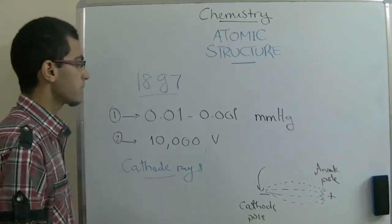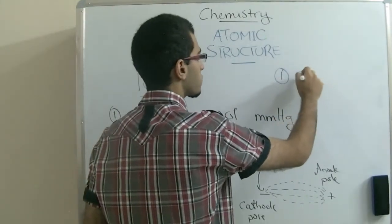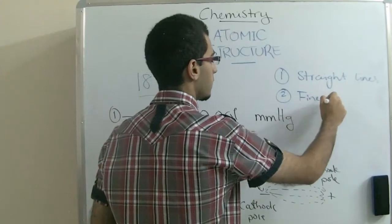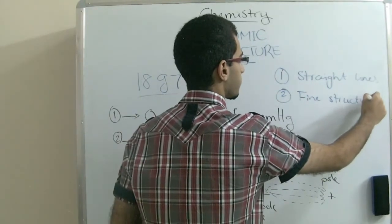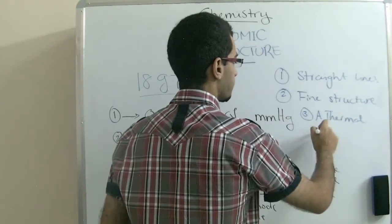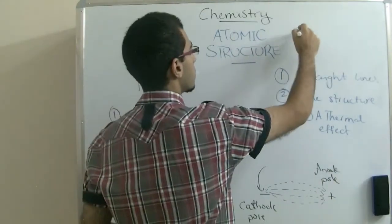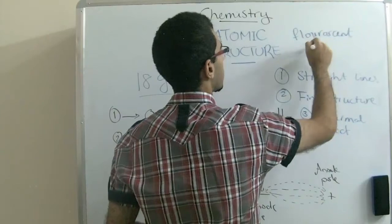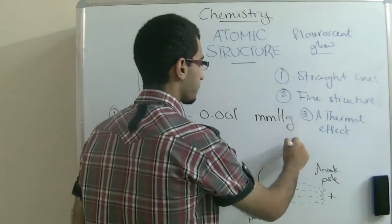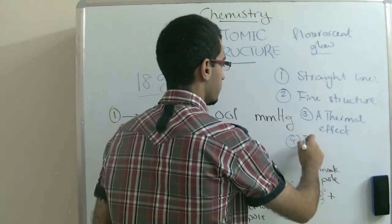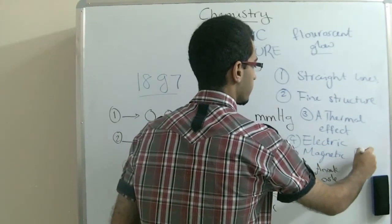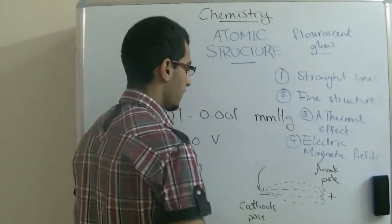There are some properties for the cathode rays. First, they move in straight lines. Their particles are very fine in their structure. They have a thermal effect. They made a fluorescent glow. And they are affected by both electric and magnetic fields, as we have seen that they move from the negative pole to the positive pole.